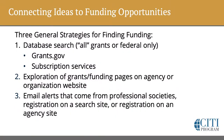There are really three strategies for finding funding. One is a database search where you might look for all kinds of grants or only for federal grants. The key source for federal grants is grants.gov, which we'll look at in detail in just a few minutes. Another source is subscription services, and your institution may have one or more of these available. You can also explore the grants or funding pages on agency or organization websites relevant to the idea you would like to explore.